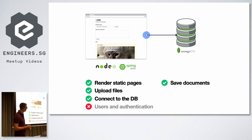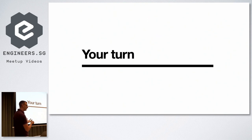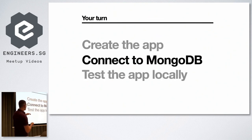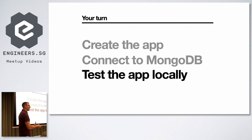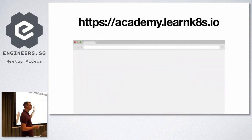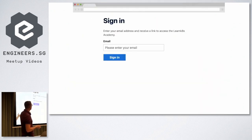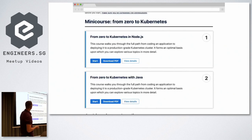We're not going to use Postgres because it's more complicated. The plan is to build the app locally: create it, connect it to MongoDB, and test it locally — uploading images and text. Because first we build it locally, then package it as a container, then put it inside Kubernetes. The steps are on the academy website: academy.learnkubernetes.io. Sign up with your email, click the link you receive, and you're logged in. Everything we do is from the academy.